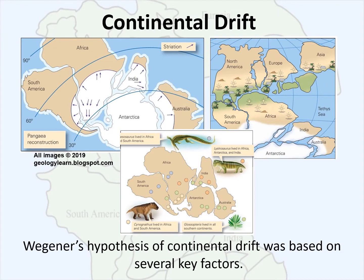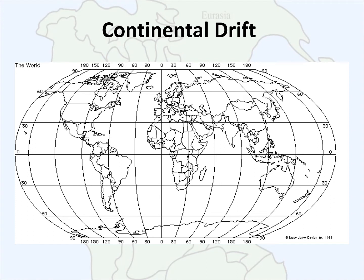Wegener's hypothesis of continental drift was based on several key factors. The first factor was the fit of certain continents, in particular those of South America and Africa. As you'll see on this illustration, the east coast of South America appears to fit inside the west coast of Africa. This is no coincidence, and scientists as well as lay people had recognized this concept for thousands of years prior to Wegener, but he was one of the first to actually record this as evidence for the presence of drift.